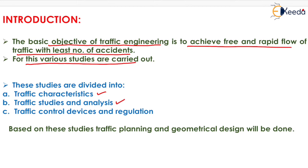The last one is traffic control devices and regulation. This covers intersections and signal systems — we go for the design of intersections as well as the signal systems.